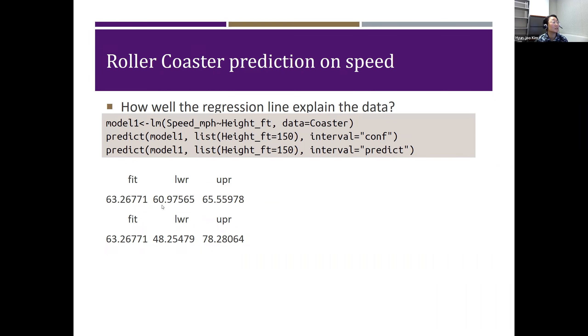We can also say 95% confident that the maximum speed of a particular roller coaster with the 150 maximum height is between 48.25479 and 78.28064 mph.